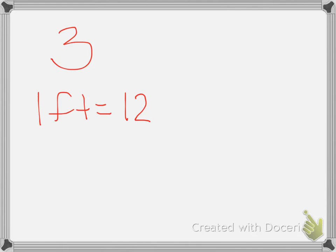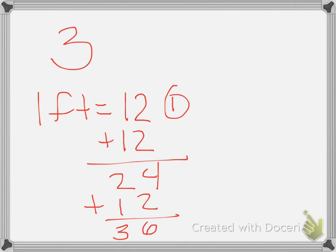We could do 36 divided by 12 or use repeated addition until we got 36. So here's one foot, two feet, three feet.